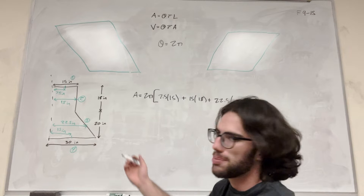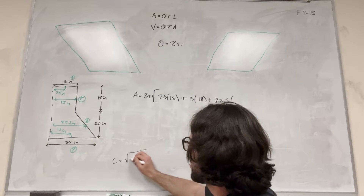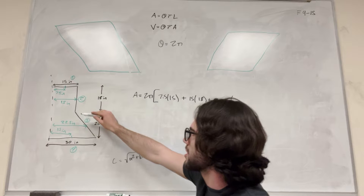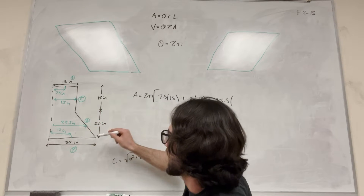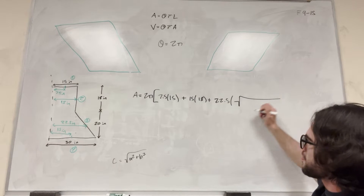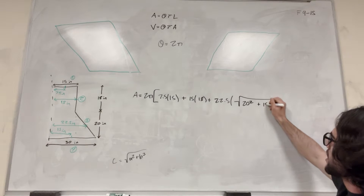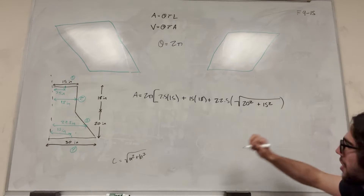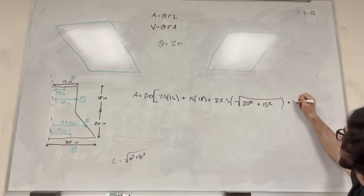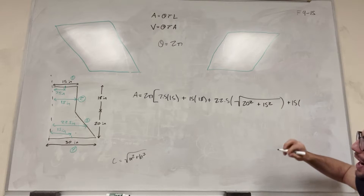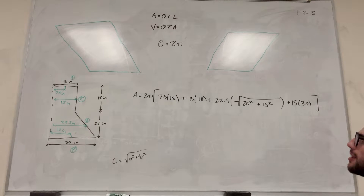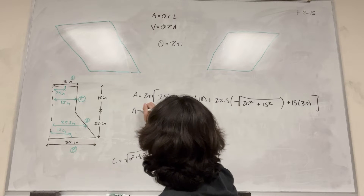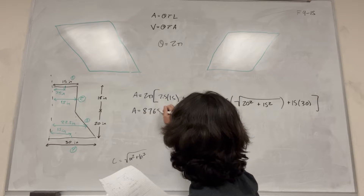Using c = √(a² + b²), where a is 20 inches and b is 15 inches, we get the diagonal length for line 3: √(20² + 15²). Then for line 4: r̄ is 15 inches and its length is 30 inches, so 15 × 30. Plugging everything into the formula gives us a surface area equal to 8,765 inches squared.